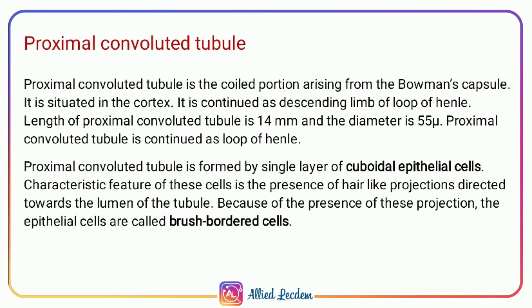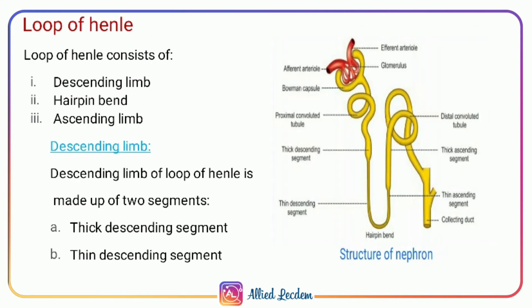The length of the proximal convoluted tubule is 14 millimeters and the diameter is 55 micrometers. A single layer of cuboidal epithelial cells forms the proximal convoluted tubule. The presence of hair-like projections directed towards the lumen is characteristic of these cells; these epithelial cells are called brush-bordered cells. In the proximal convoluted tubule there is active reabsorption of sodium and chloride.